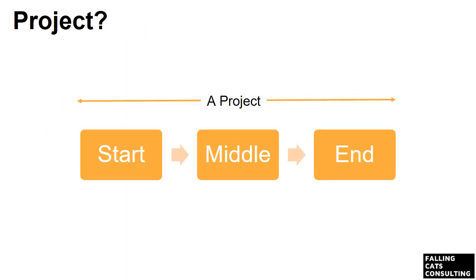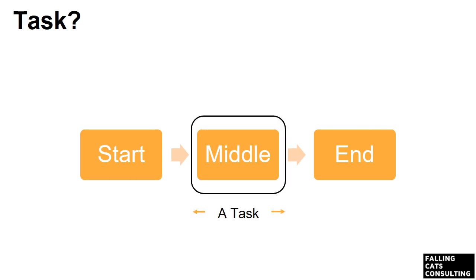There are some terms that need to be defined before we dive into the software, so let's get that sorted. A project is temporary in that it has a defined beginning and end in time, and therefore defines scope and resources. A project is unique in that it is not a routine operation, but a specific set of operations designed to accomplish a singular goal. A task is a distinct activity that needs to be accomplished within a defined period of time or by a deadline. A project is made up of a set of tasks.